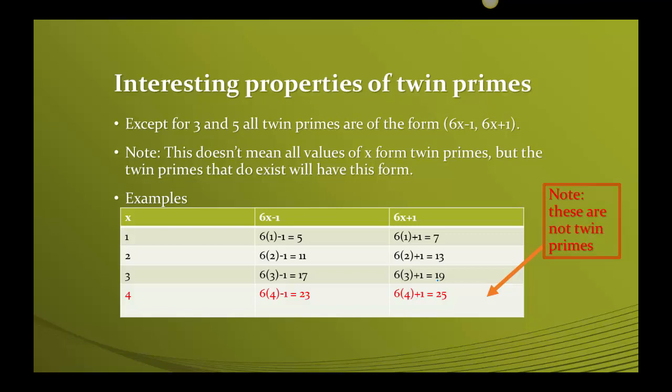What we have to stop and say is not all numbers that we put into 6x minus 1 and 6x plus 1 are going to give us twin primes. Because when we get to the number 4, I do 6 times 4 is 24. I subtract 1, I'm at 23, so far so good. But when I do 24 plus 1, I get 25, and I have to stop myself. 25 isn't prime. It's never going to be prime. So the 23 and the 25 are not twin primes.